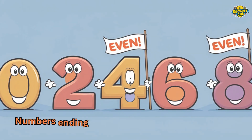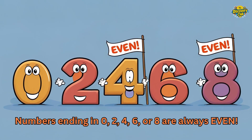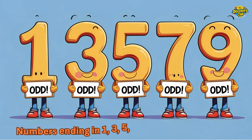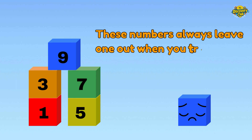Let me share a tip with you. If a number ends in zero, two, four, six, or eight, it's always an even number. Easy, right? And here's another tip. If a number ends in one, three, five, seven, or nine, it's always an odd number. These numbers always leave one out when you try to split them.